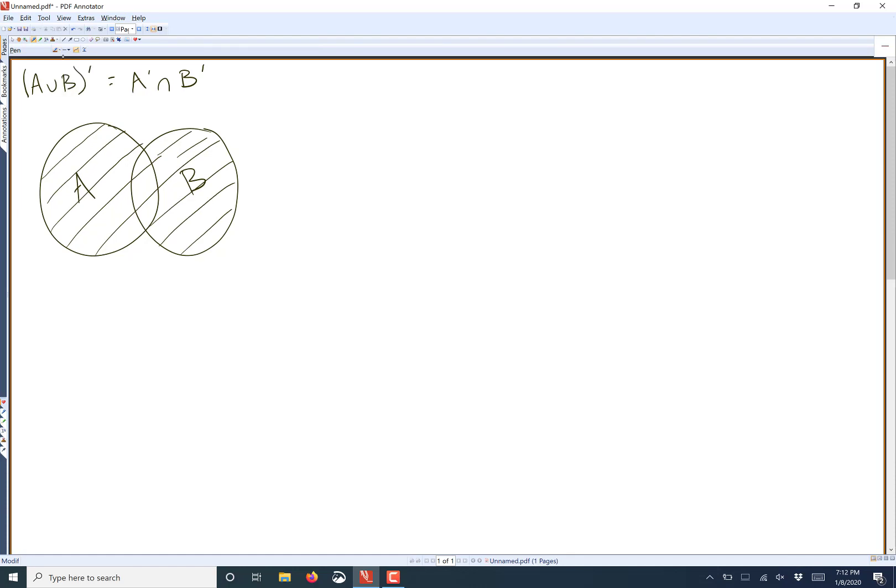Now for the complement of that, which is actually what we're interested in, it would be everything that was not in A or B or both. So basically everything that's not in those two circles. So we're radiating out from the two circles. So that, this red, is what we're actually interested in for this problem.